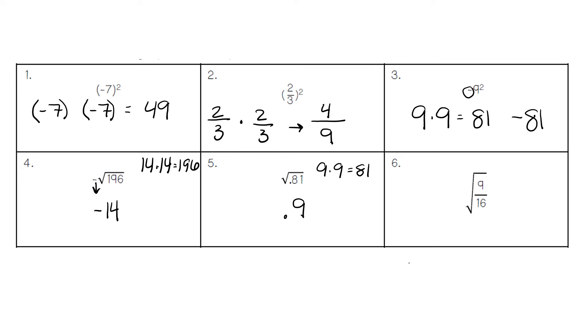In number six, we are taking the square root of nine-sixteenths. We can break that down into three times three over four times four, so three-fourths is our final answer.